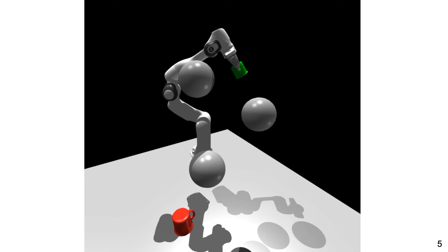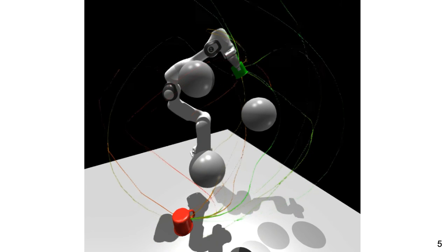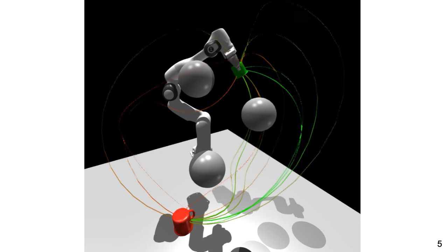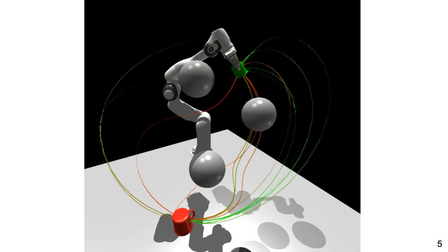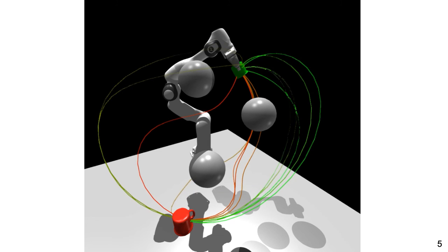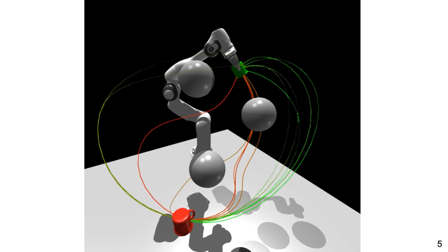We test this approach on a 7 degree of freedom manipulator, where the robot must place the green cup at the red goal while avoiding the three obstacles. We initialize the motion plans by randomly sampling from the GP prior and perform iterative updates until convergence. Each particle trajectory is indicated by the corresponding colored end effector trajectory. Green lines signify lower cost trajectories, whereas red denotes higher cost.